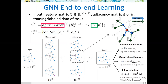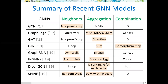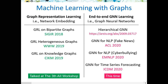The training target can have multiple choices, including node classification, graph classification, and link prediction. Different GNN models have their own design of neighbor sampling, aggregation, and combination, leading to various effectiveness across different downstream tasks. In summary, for machine learning with graphs, both graph representation learning and graph neural networks are proven to be effective.